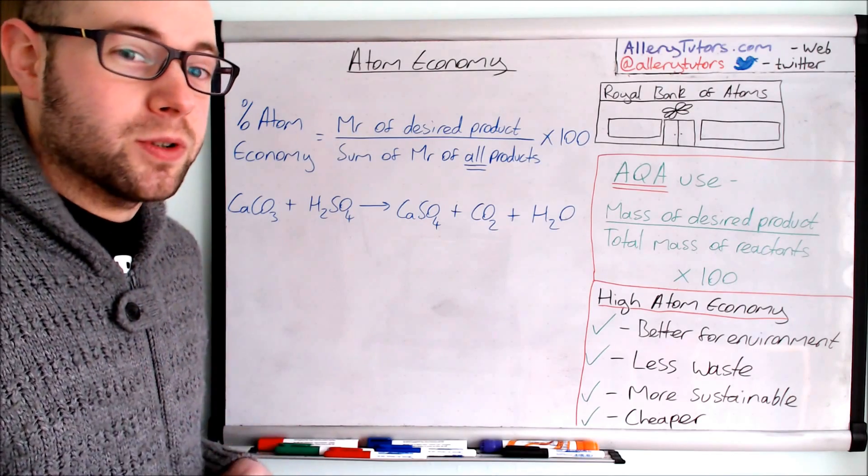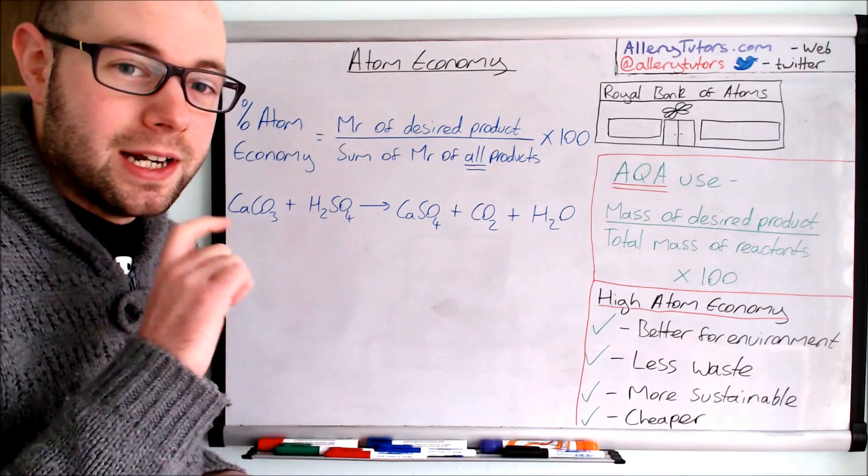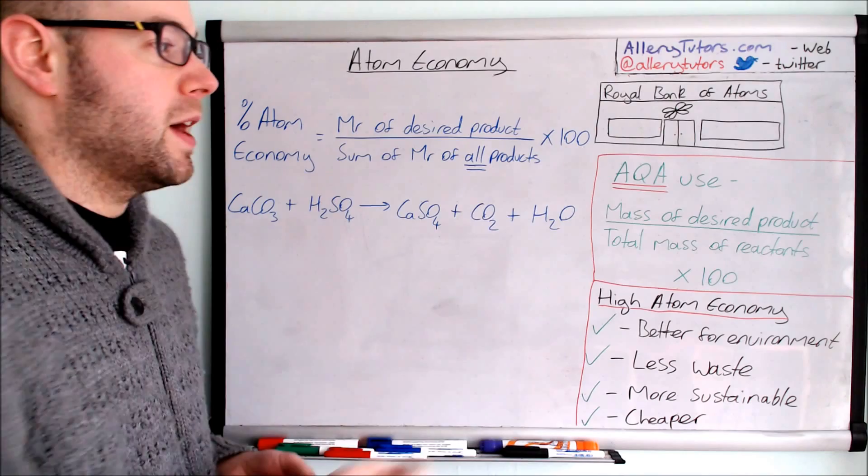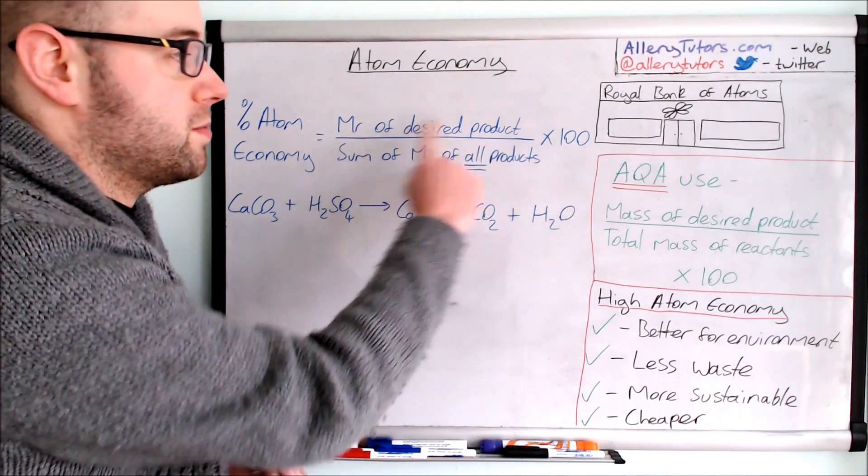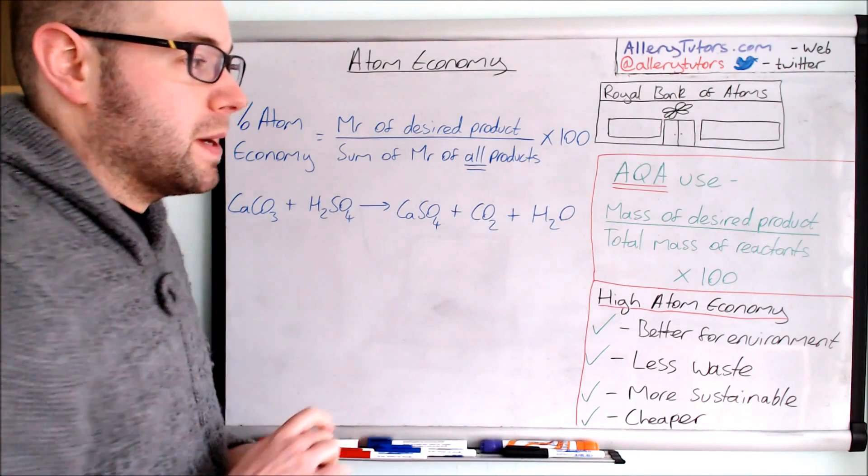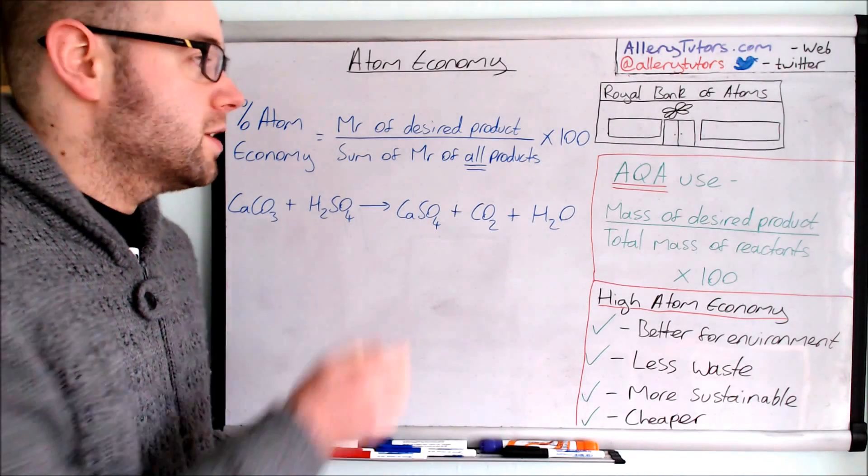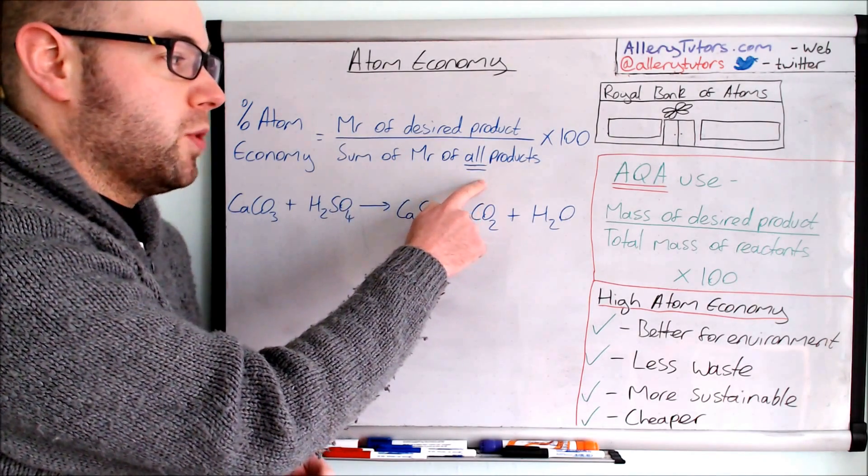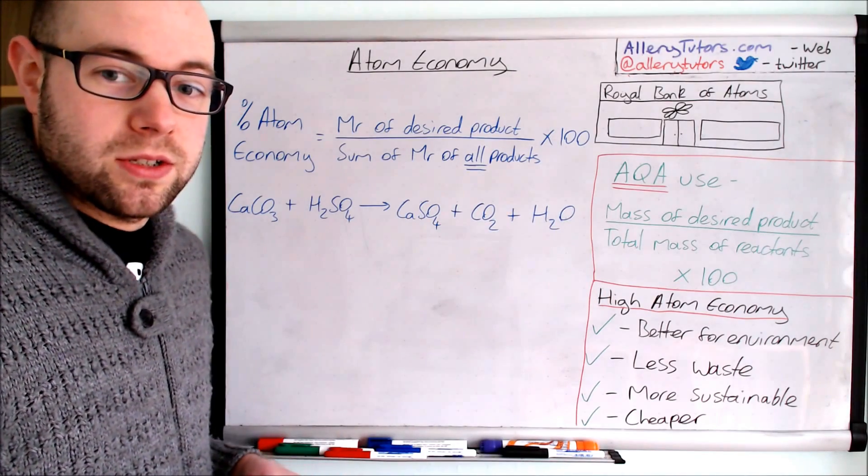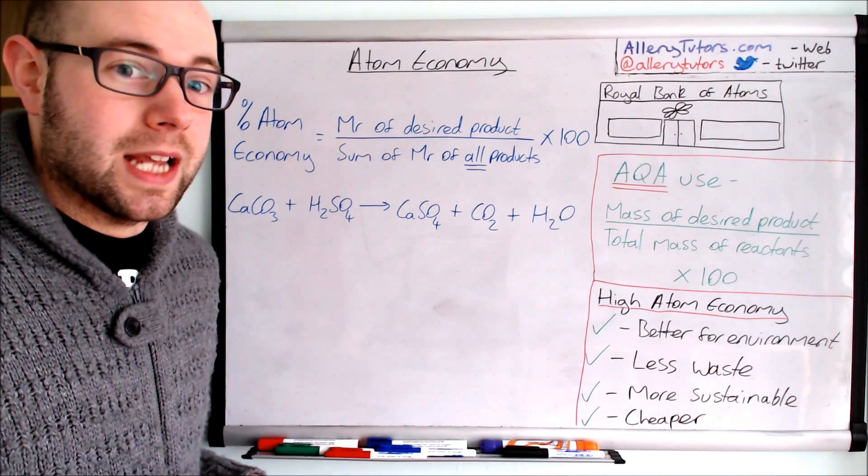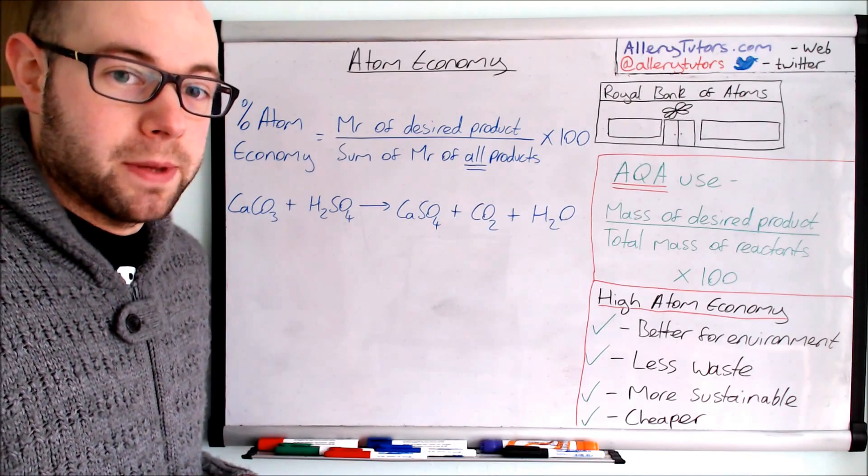Now some exam boards, OAQA in particular, have a slightly different formula and this is basically mass of desired product on the top divided by the total mass of reactants times by 100. So instead of the sum of all products we're looking at the sum of all the reactants instead. It still gets you the same answer so it's not so much a problem.